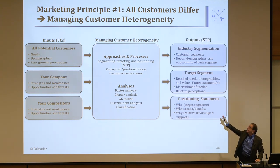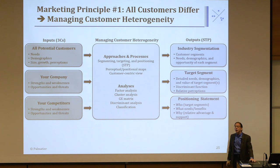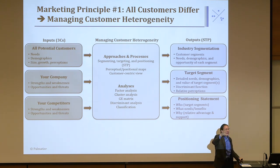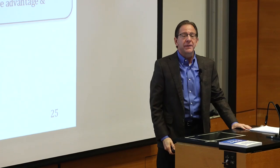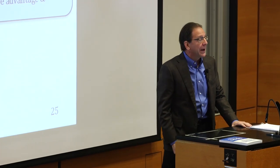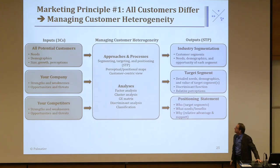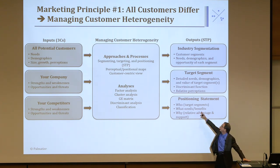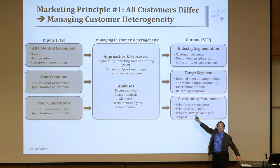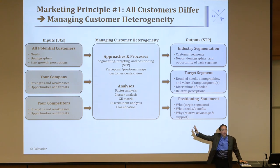The outputs: the most important thing you get is a road map — a picture of the whole industry showing all segments and their descriptions. Then the value, attractiveness, and your strength in each segment allows you to pick your target. You also get a way to find people in the target segment. Third, once you've picked your target segment, you write a positioning statement clearly describing for both internal and external people who the target segment is, what they need, and what you'll offer them to be advantageous.